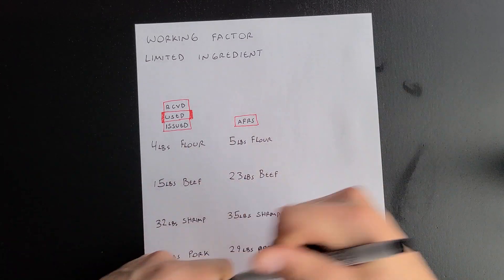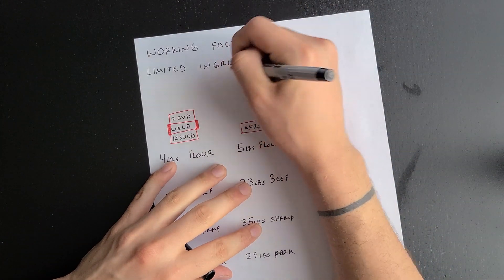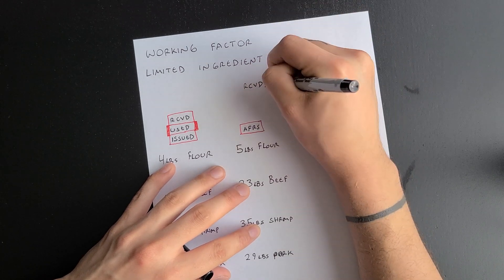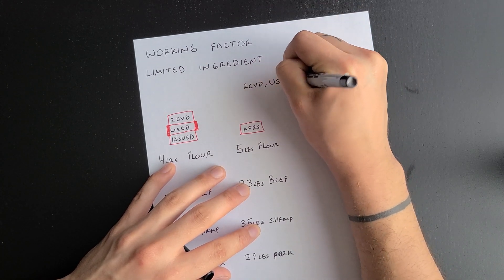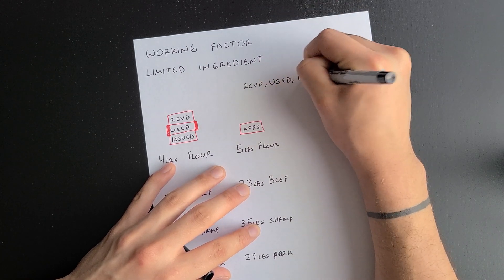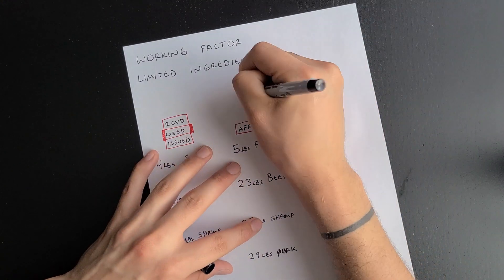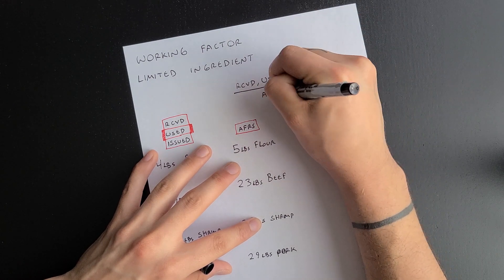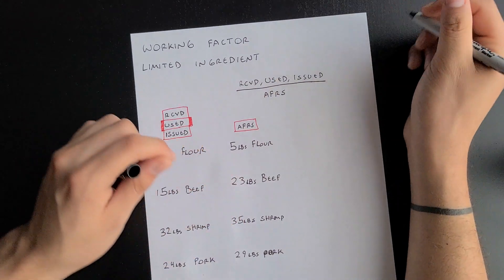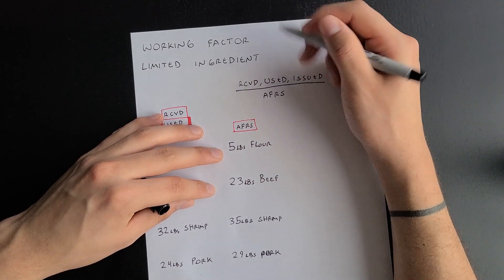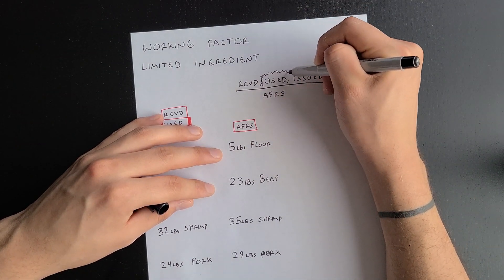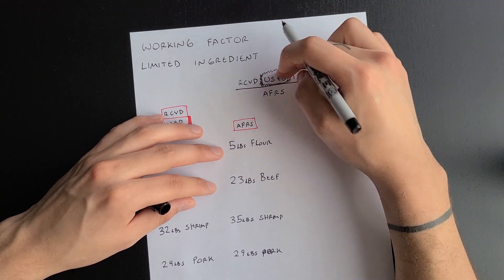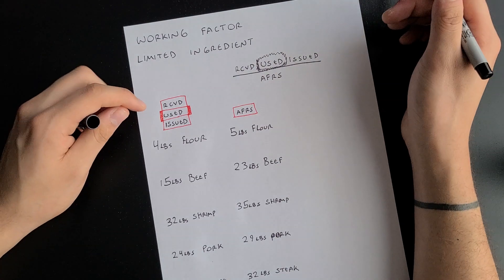The formula for this is: received, used, or issued — divided by your AFRS, or whatever the recipe calls for. The main word you want to focus on is the middle one: used. Whenever you start working on the word problems, that's the one you want to look for — your used.